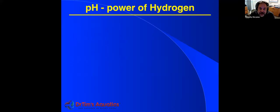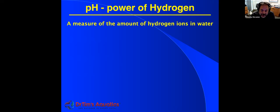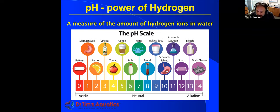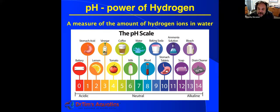Next is pH. It's a basic measure — always small p, always capital H — which stands for 'power of hydrogen.' It is the measure of hydrogen ions in water. Where pH gets confusing is it's a negative number, meaning the more hydrogen ions, the lower the pH. That's why a pH of 1 or 2 has far more hydrogen ions than a pH of 8 or 9. On top of that, it's also logarithmic, which can be confusing.